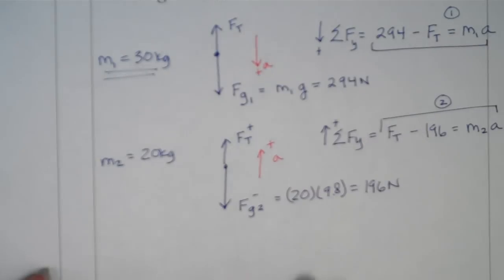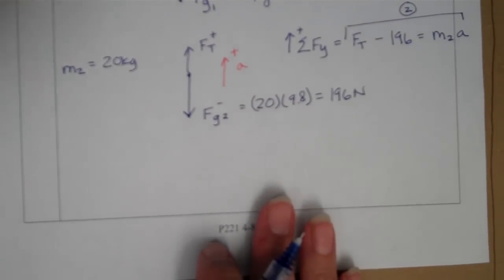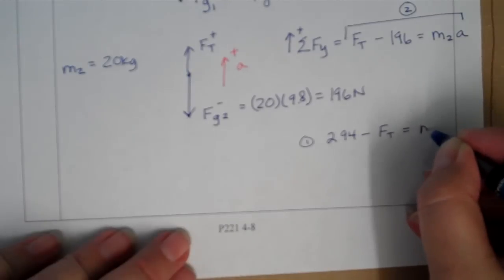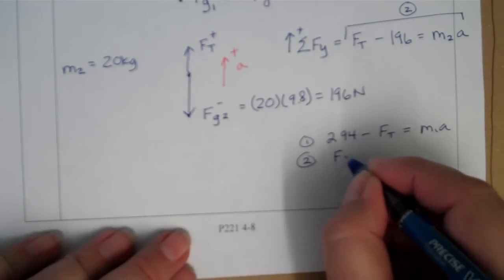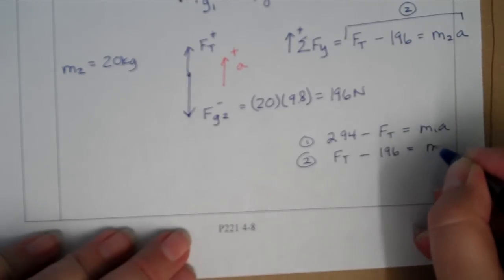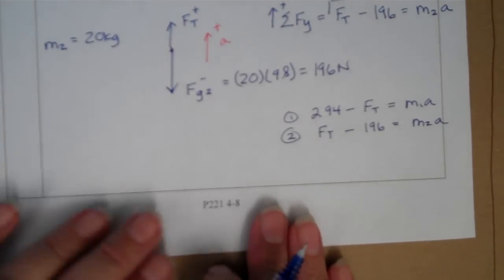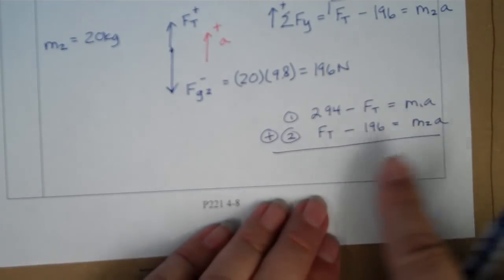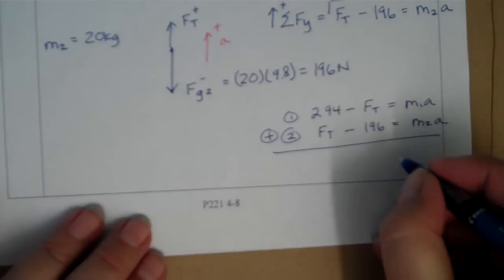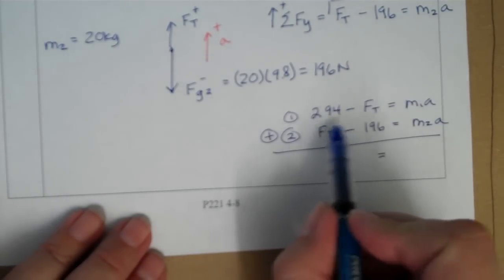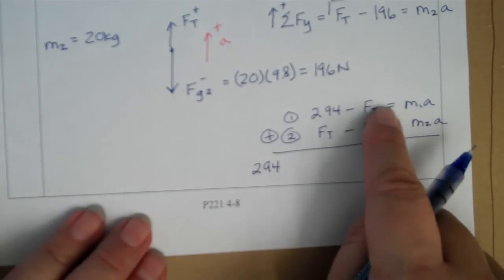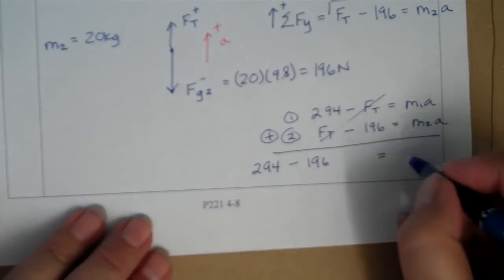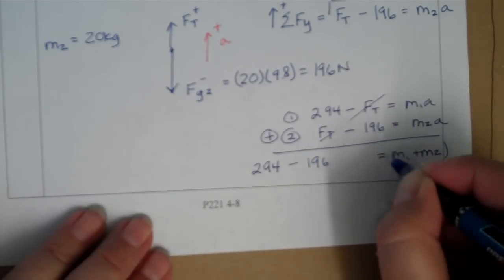So we have two equations, two unknowns. And let's look at our two equations. We may be able to solve this pretty cleanly. Equation 1 is that 294 minus FT equals M1A. Equation 2 is that FT minus 196 equals M2A. And I'm going to add equation 1 plus equation 2. And I'm going to add everything on the left side together, everything on the right side together, so that it's still going to be equal. And I can see that I have a positive 294 minus FT plus FT. So the FT's cancel, and then a minus 196 equals M1, M2, and I'm going to factor out that A.